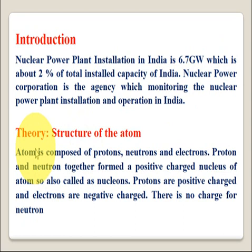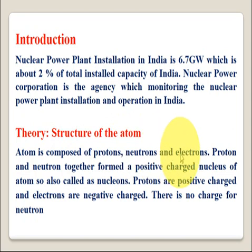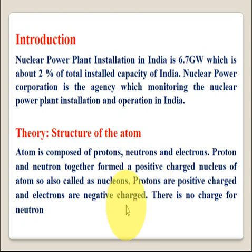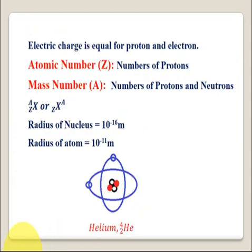Now we will discuss theory about the nuclear power plant. First we will discuss the structure of the atom. An atom is composed of protons, neutrons, and electrons. Protons and neutrons together form the positively charged nucleus of the atom and are also called nucleons. Protons are positively charged, electrons are negatively charged, and neutrons have no charge. The electric charge is equal for proton and electron.